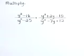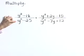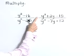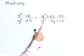Multiply the rational expressions: y squared minus 16 over y squared minus 25, and y squared plus 2y minus 15 over y squared minus 7y plus 12.